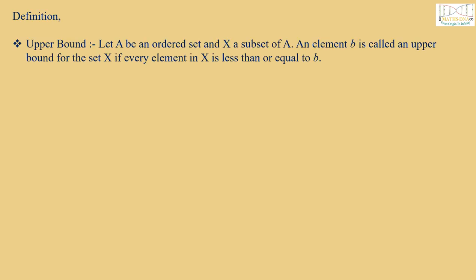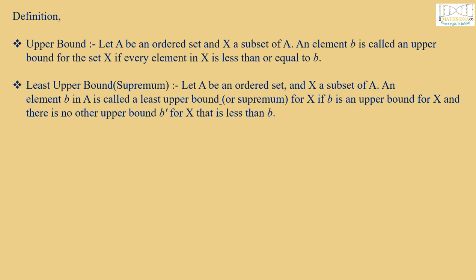Before solving the question, let us revise some definitions. Upper bound: Let A be an ordered set and X be a subset of A. An element B is called an upper bound for the set X if every element in X is less than or equal to B. Least upper bound or Supremum: An element B in A is called a least upper bound or Supremum for X if B is an upper bound for X and there is no other upper bound B' for X that is less than B.